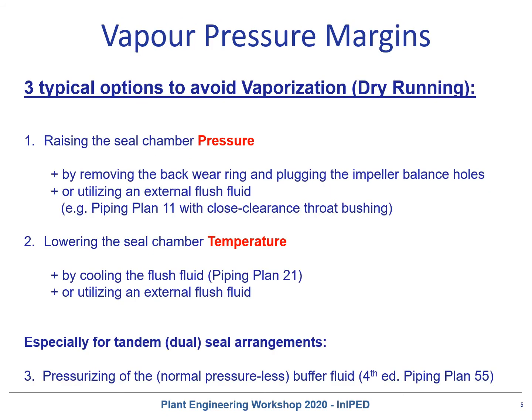How can the required pressure margin be maintained? There are three options to suppress or avoid dry running. First, raising the seal chamber pressure by removing the back wear ring, or plugging the impeller balance holes, or utilizing an external flush fluid in combination with a closed clearance throat bushing — utilizing a Plan 11 from the discharge nozzle, from the higher pressure source.